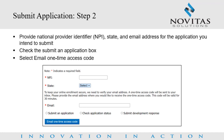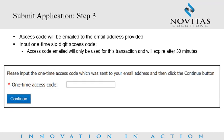Submit Application Step 3: The access code will be emailed to the email address provided. You will have to input the one-time six-digit access code. The access code emailed will only be used for this transaction and will expire after 30 minutes.